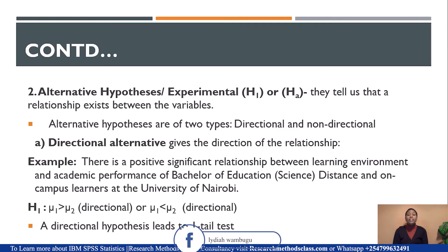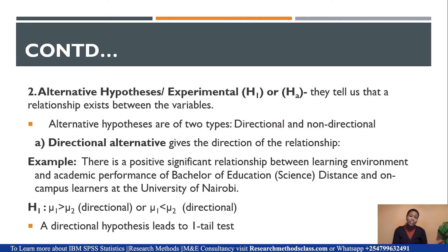Then we have the alternative hypothesis, also called experimental hypothesis, denoted by H1 or HA. This hypothesis tells us that a relationship exists between the variables. We have two types of alternative hypothesis: directional and non-directional. Directional gives the direction of the relationship — it tells us whether we will be testing the hypothesis on the positive or the negative side of the normal curve. For example: there is a positive, significant relationship between learning environment and academic performance of Bachelor of Education, Science, Distance, and On-Campus Learners at the University of Nairobi. You have already given it the direction, so it will be tested on the positive side.